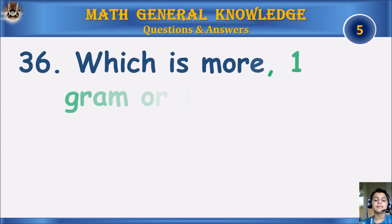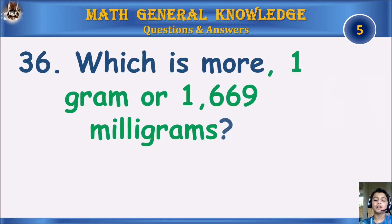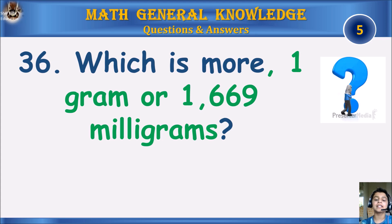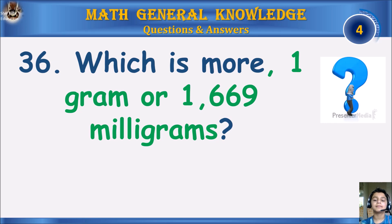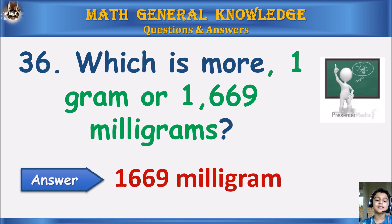Which is more — 1 gram or 1669 milligrams? Your time starts. The answer is 1669 milligrams.